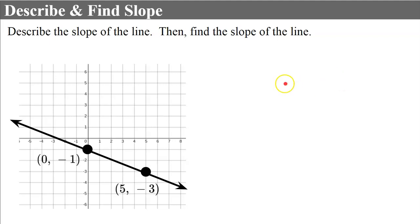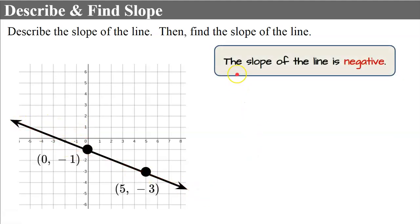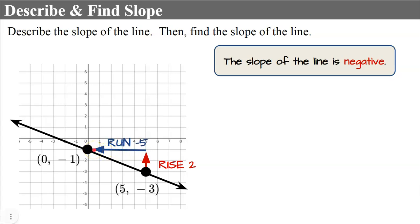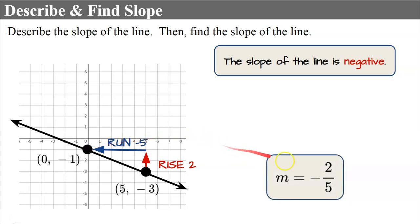Now we're going to practice describing and finding slope. We've been asked to describe the slope of this line and then find the slope. It's falling from left to right, so the slope is negative. Now we're going to do rise over run since it's graphed. We rise positive 2, then run negative 5 — going left is negative. So rise over run gives us negative two-fifths.